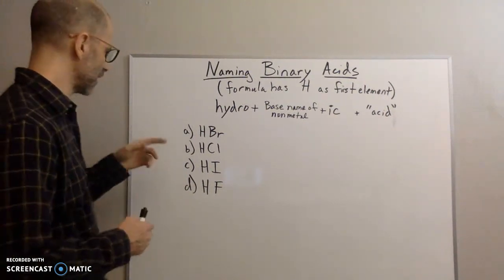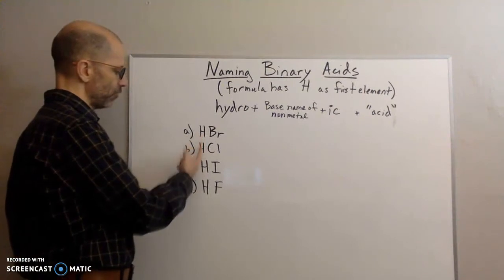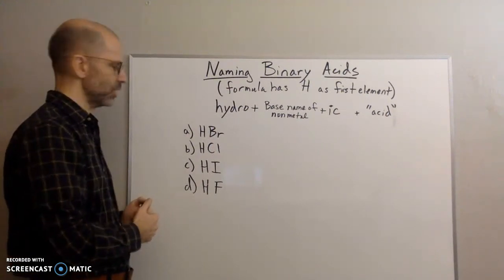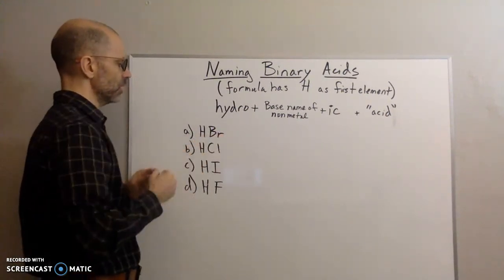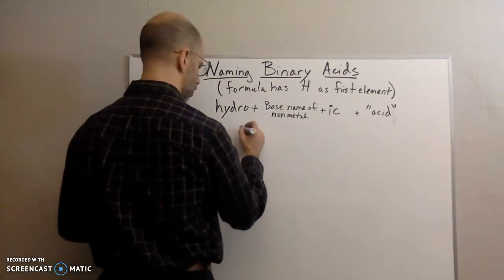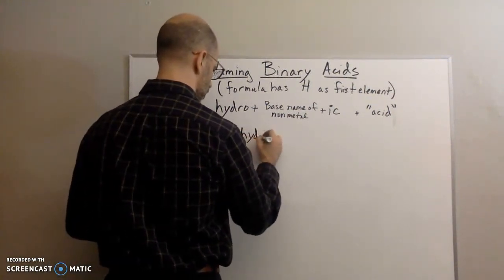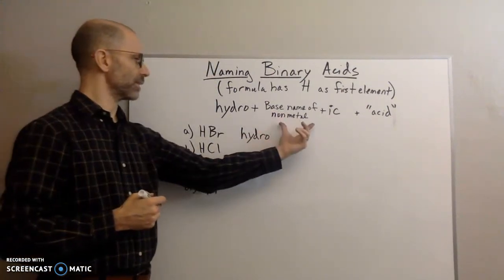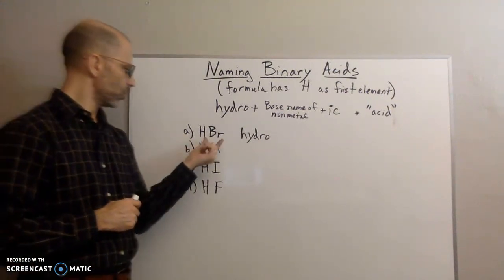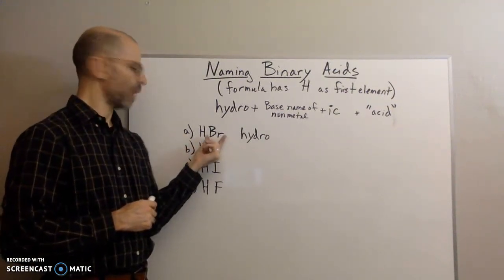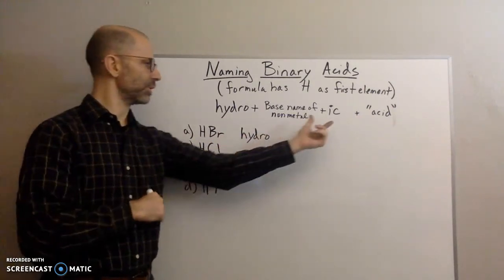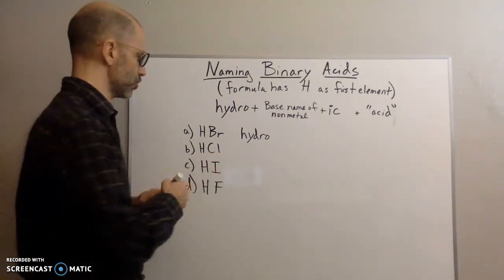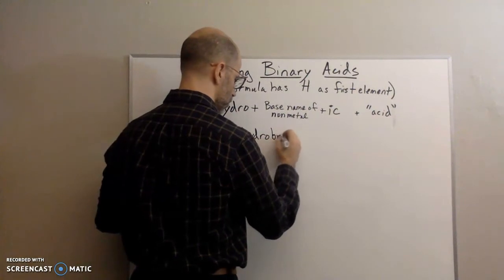So as I mentioned, you have your hydrogen first. So the hydro is going to refer to the hydrogen being first. So you'll always begin with hydro. All of these are going to begin with hydro. So hydro, that's the first part. Now I look at the base name of the non-metal, which is bromine. I'm going to drop the ending, I-N-E, and I'm going to replace it with ick. So bromine goes to bromic.